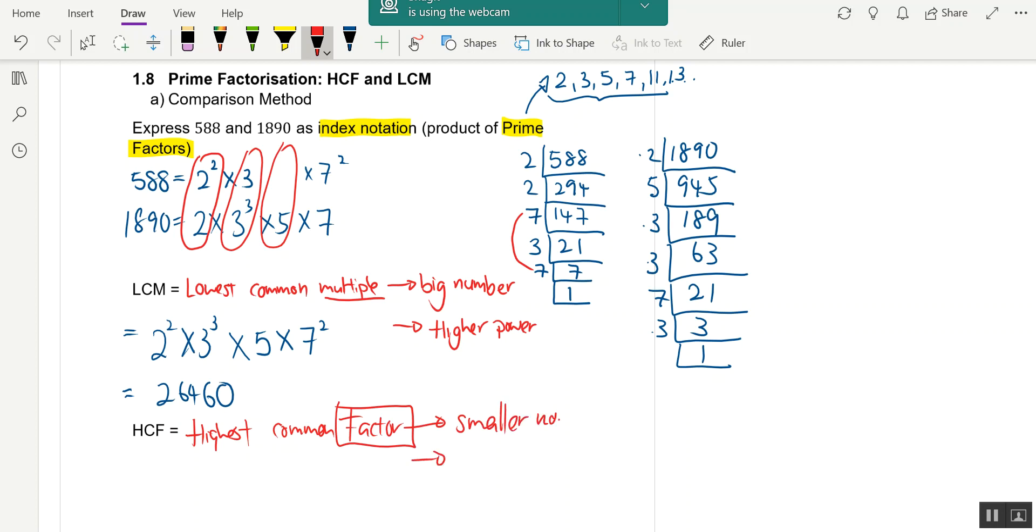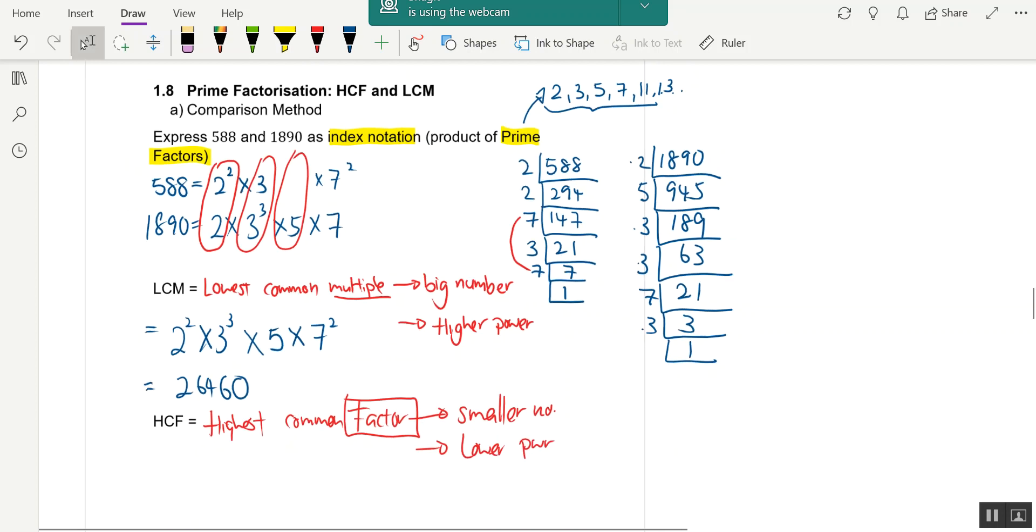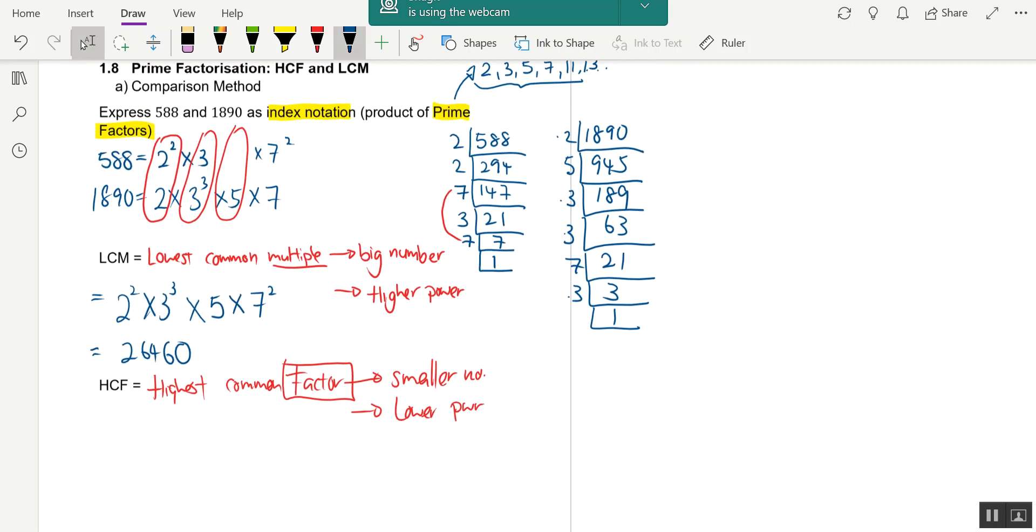Which means we take the lower power among the two. If one doesn't have it, then we cannot take it. So the HCF equals - I look at them again: 2² and 2, we take 2.